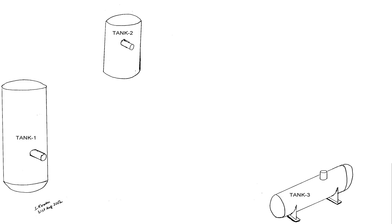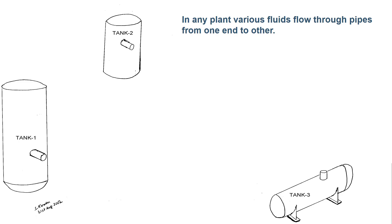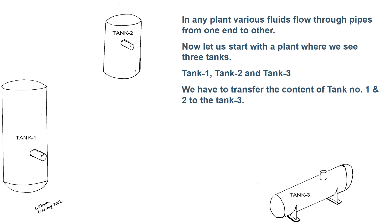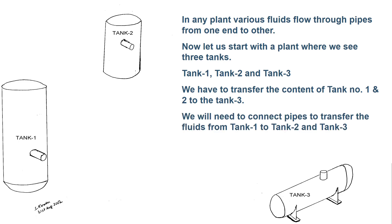Let's start building our plant. This dummy plant has three tanks: two for storage of raw material and one for mixing of the final product. Let's assume tank 1 and 2 have raw material that is supposed to reach tank 3 to produce the final product. The plant requirement is to transfer the content of tank 1 and 2 to tank 3 in a controlled manner, as we have to maintain the proper ratio of raw material 1 and 2 in the final product. In the first step, you need pipes to connect these three tanks so that we can transfer the fluid from tank 1 and 2 to tank 3.